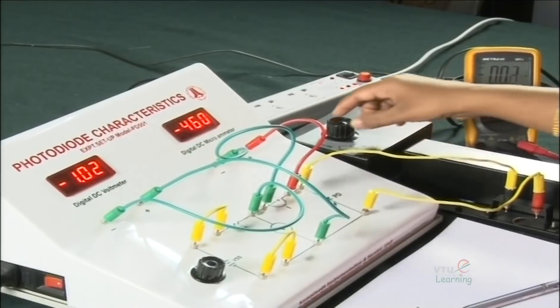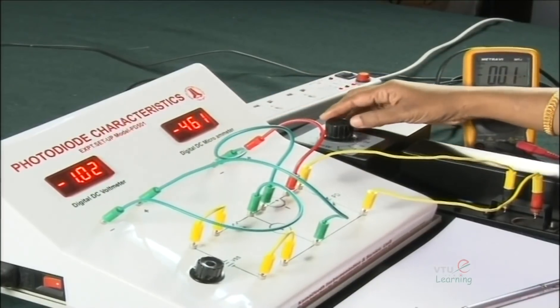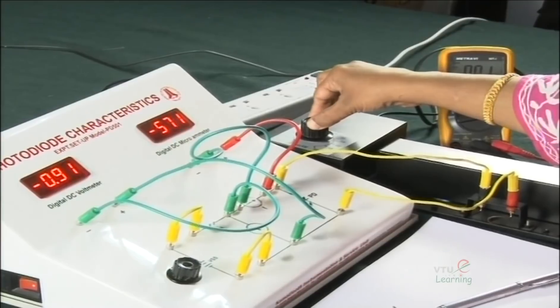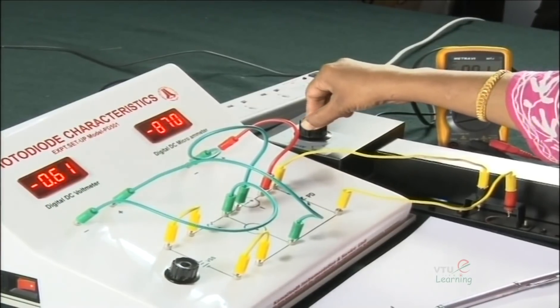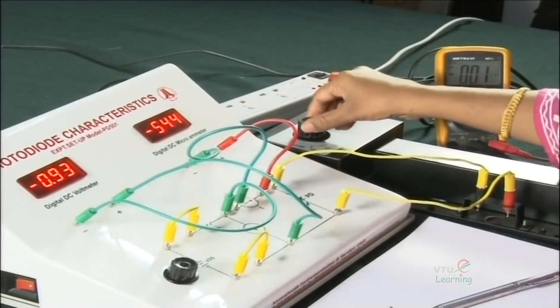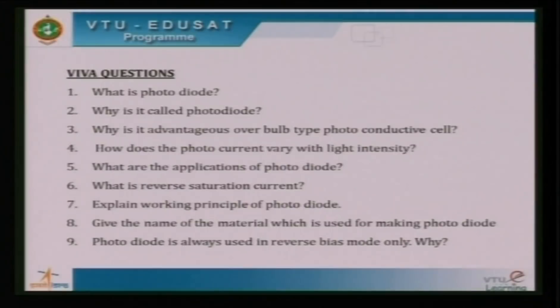Now the power of the LED is 10 milliwatts — you see that current is around minus 460 microamps. Vary in steps of 1: 11, 12, 13, 14 milliwatts — you observe that the current is increasing linearly. As illumination increases, photocurrent increases. The readings are tabulated and graphical observation confirms that photocurrent is directly proportional to the applied illumination power, not to the applied reverse voltage across the diode.